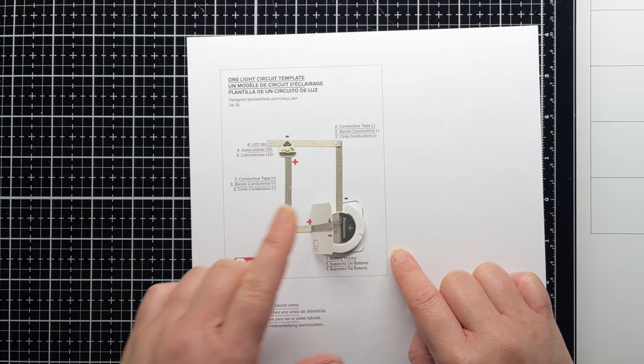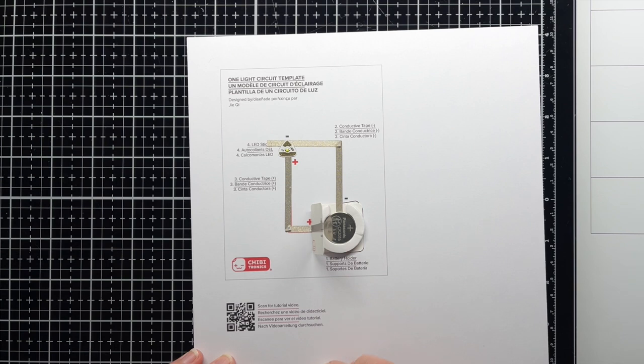When you close the battery holder and apply pressure, the positive line of tape touches the positive side of the battery, completing the circuit and the LED sticker lights up.